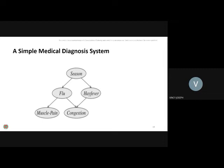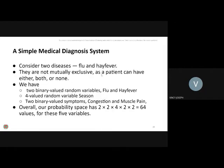Here is a simple medical diagnosis example. Based on the season, you can have two different types of illness: flu and hay fever. Flu has two symptoms — muscle pain and chest congestion. Hay fever is not accompanied by muscle pain, but congestion will be present. The diseases are not mutually exclusive: a patient can have either flu or hay fever, or both, or neither. This is a graphical representation of a simple medical diagnosis system.